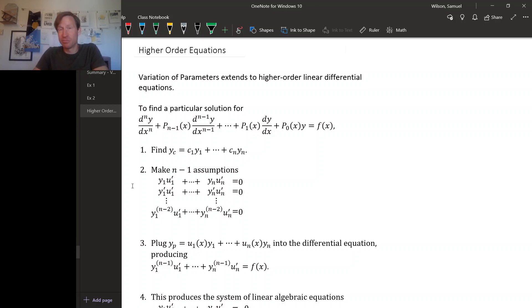When we figured out variation of parameters, it might have occurred to you that there didn't really seem to be anything special about the equation being second order. If the equation were higher order, you just get bigger systems of equations and messier formulas for u sub 1 prime and u sub 2 prime and u sub 3 prime and so on. And that's true. So I'd like to show you really quickly how it works out for higher order inhomogeneous linear differential equations.